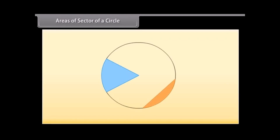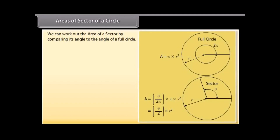Areas of a sector of a circle. There are two main slices of a circle: the pizza slice is called a sector, and the slice made by a chord is called a segment. We can work out the area of a sector by comparing its angle to the angle of a full circle.